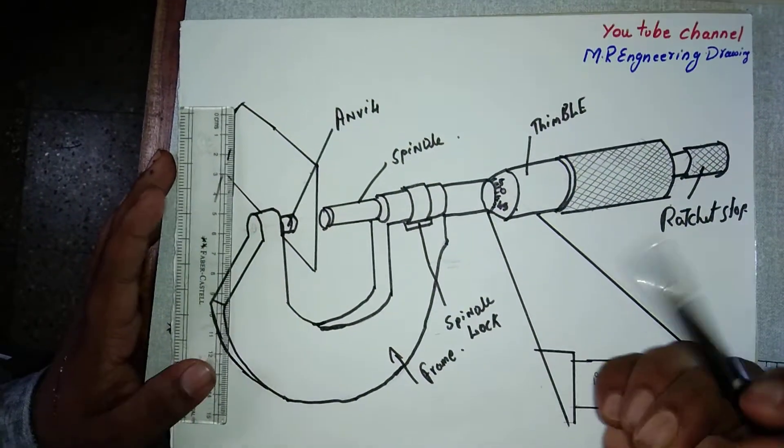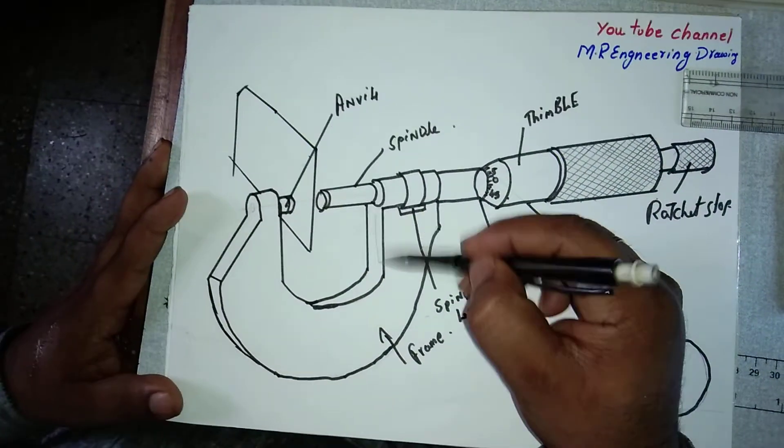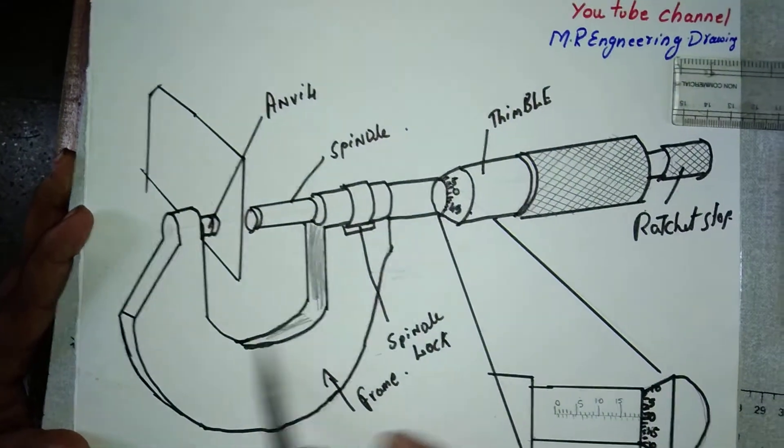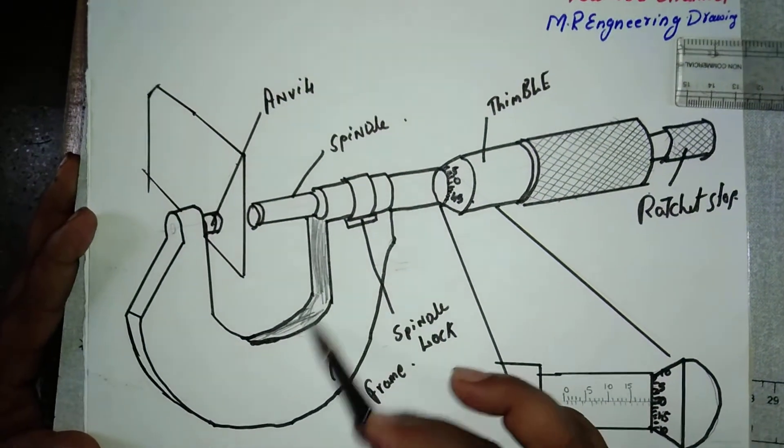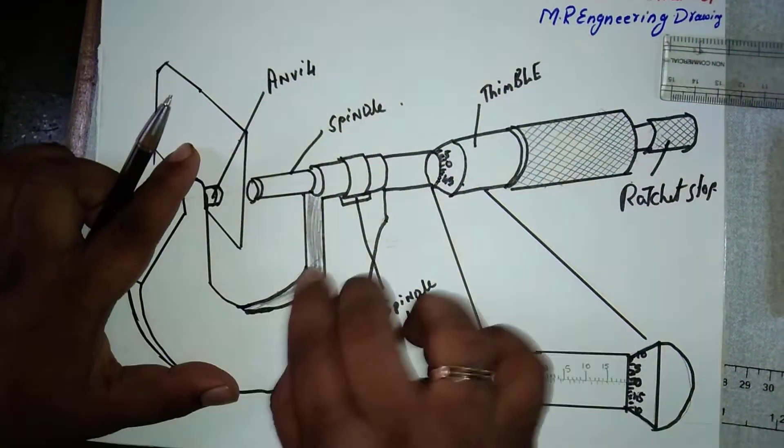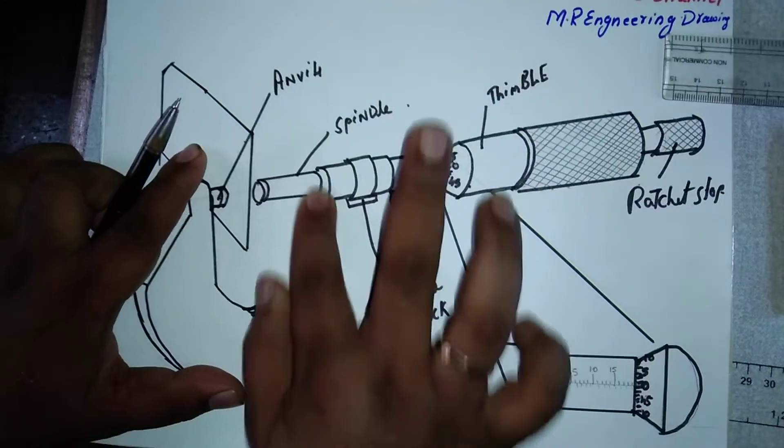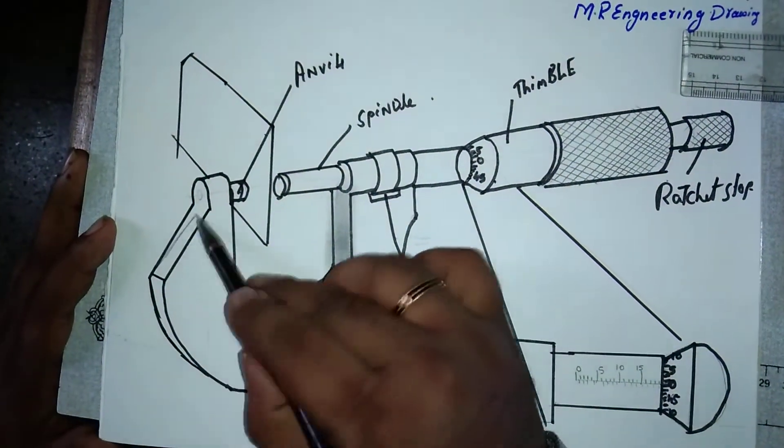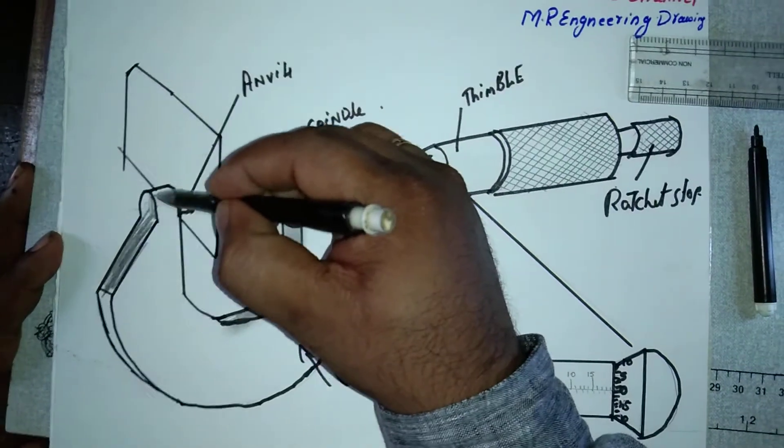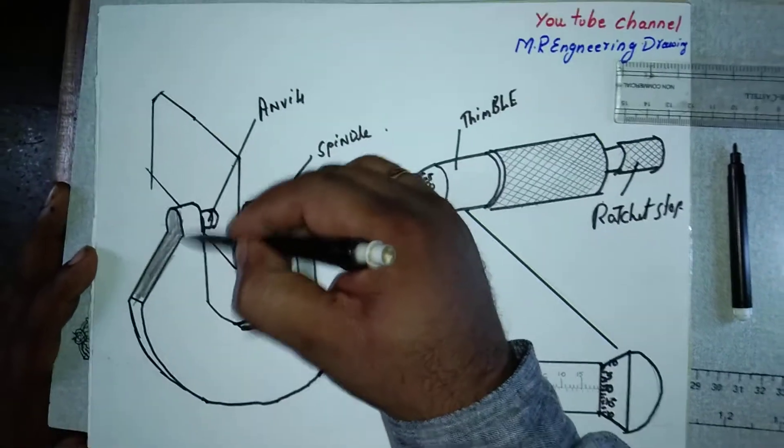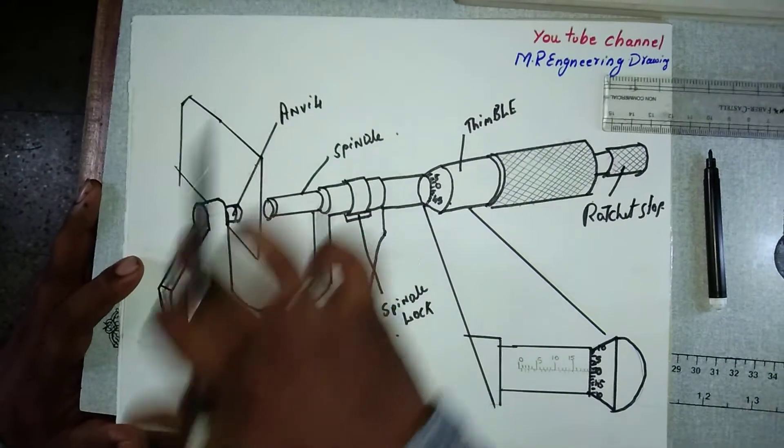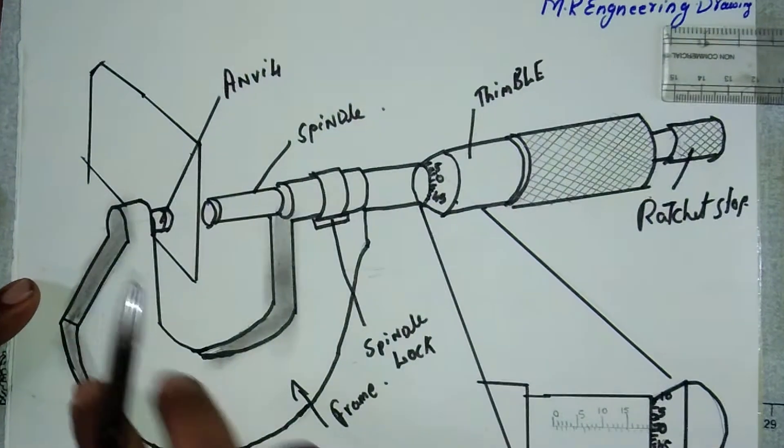If you need shading it is very easy, you know I have already shown in the previous video. It will get a good look. This is called shading. Take a little bit of newspaper, just rub it. See how it will come very nicely. Where you need shading you can put it, then the drawing will give a very good look. My dear friends, this is outside micrometer for fitter students.